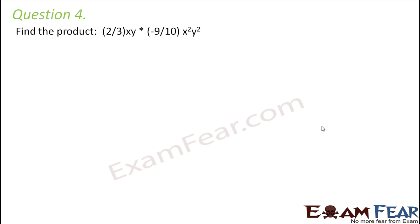Question number 4: Find the product. Here you have (2/3)xy multiplied by (-9/10)x²y². To find the product, first let us multiply the numeric coefficients, so 2/3 multiplied with -9/10, and then let's multiply the x terms together. So x into x² would be x³, y into y² would be y³.